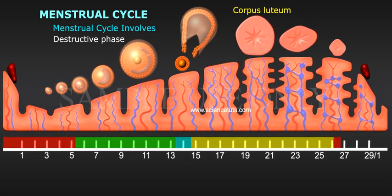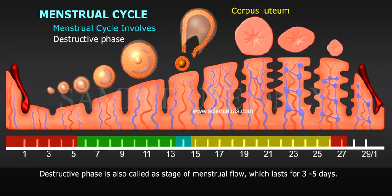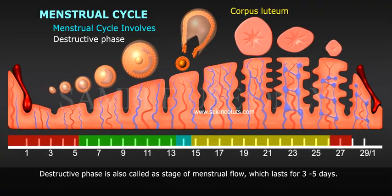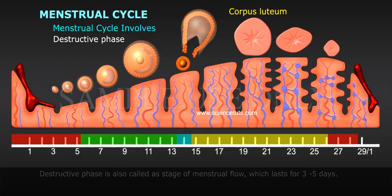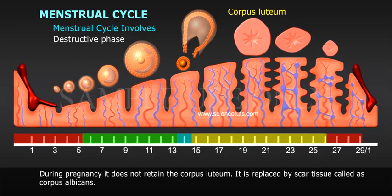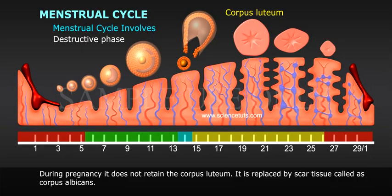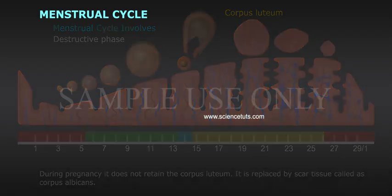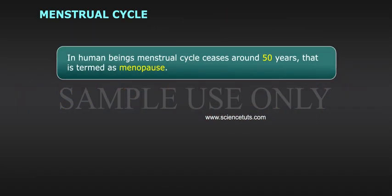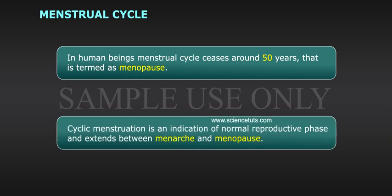Destructive phase: The destructive phase is also called the stage of menstrual flow, which lasts for 3 to 5 days. During this phase, the corpus luteum is not retained and is replaced by scar tissue called corpus albicans. In human beings, the menstrual cycle ceases around 50 years of age, which is termed menopause. Cyclic menstruation is an indication of the normal reproductive phase and extends between menarche and menopause.